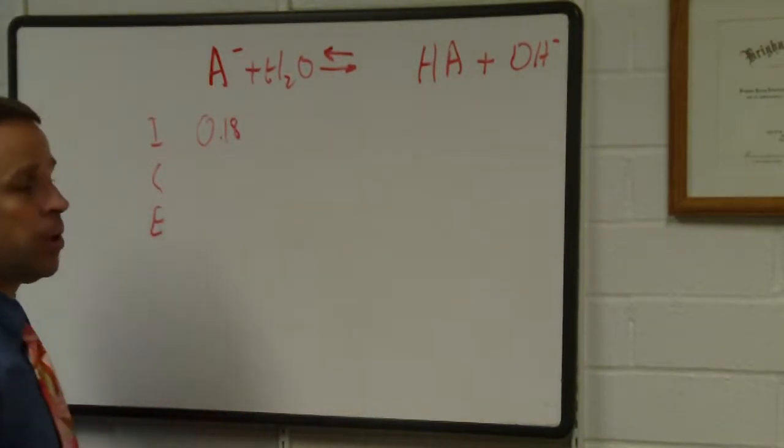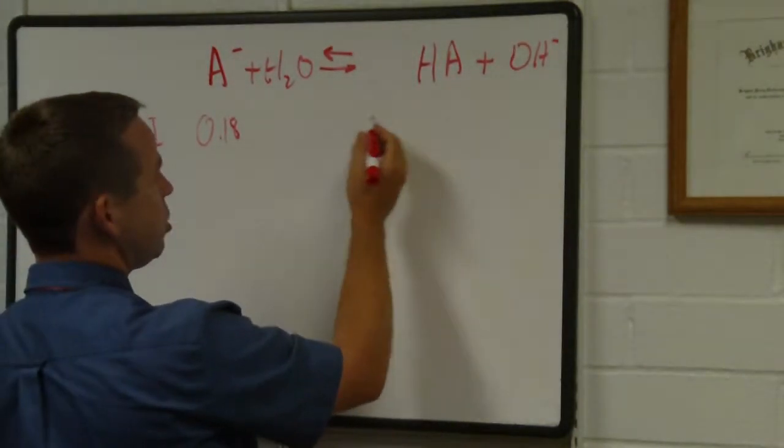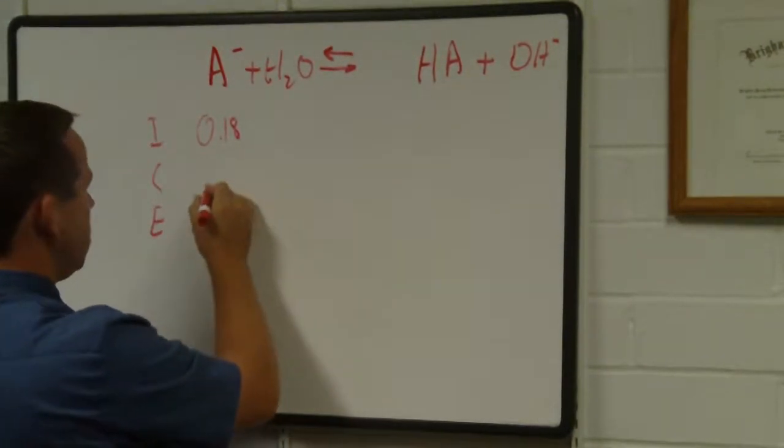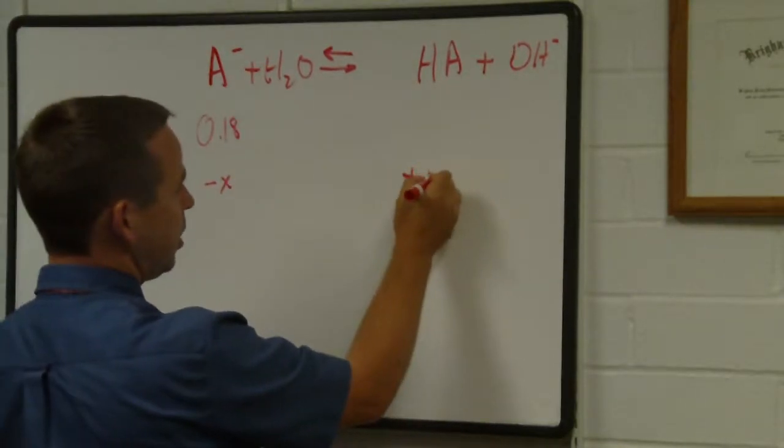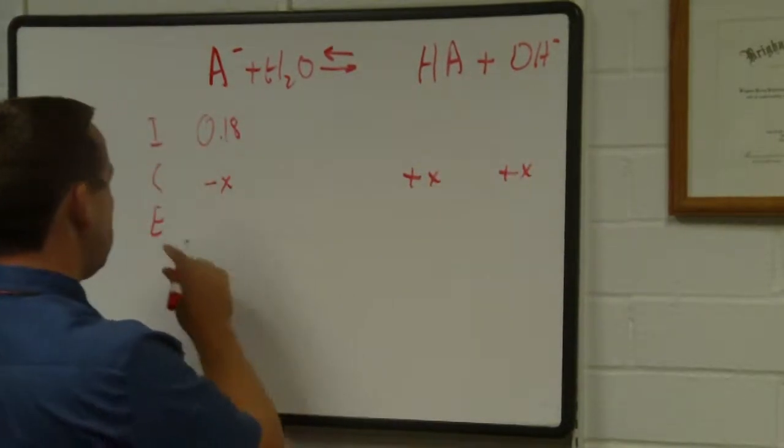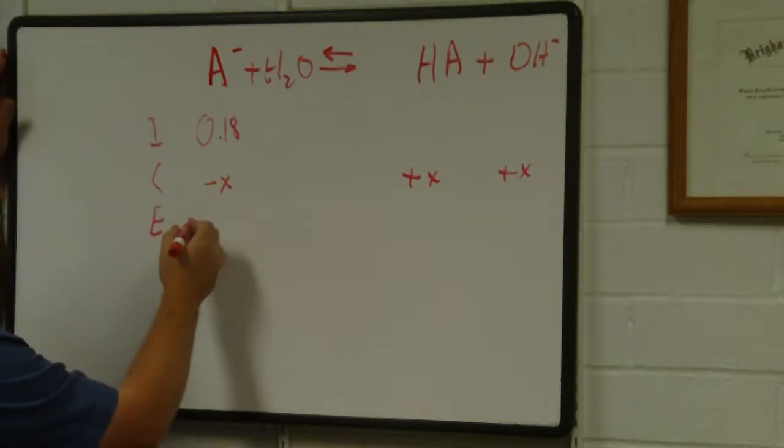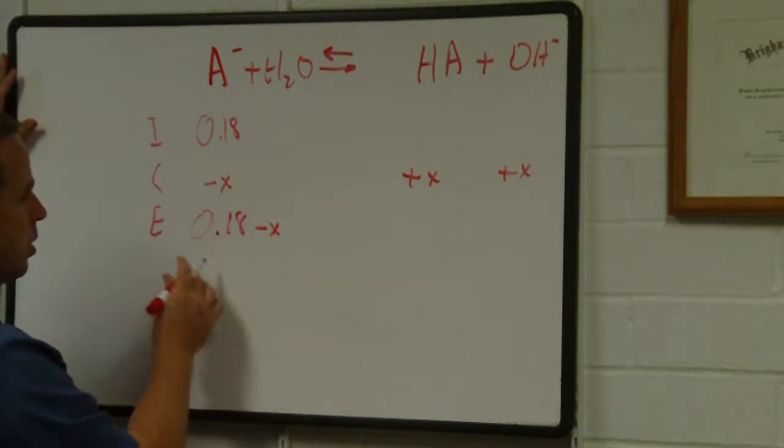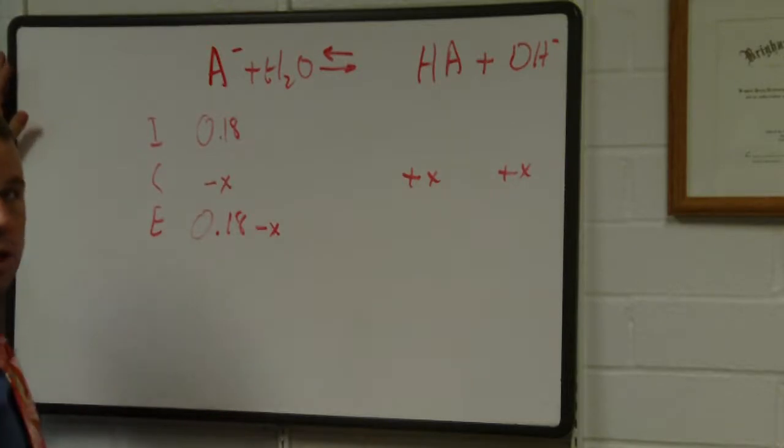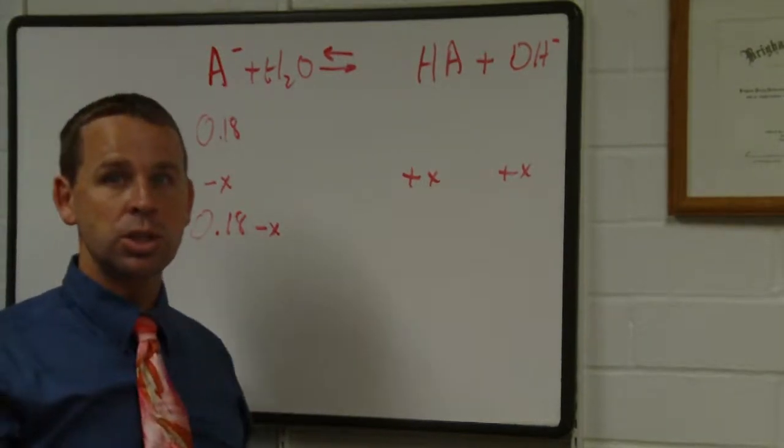We were told that this is 0.18 molar to start off with. If we form an ICE table to help us figure out what's going on, we know there's going to be some dissociation occurring so this has to be minus X, this has to be plus X and plus X.